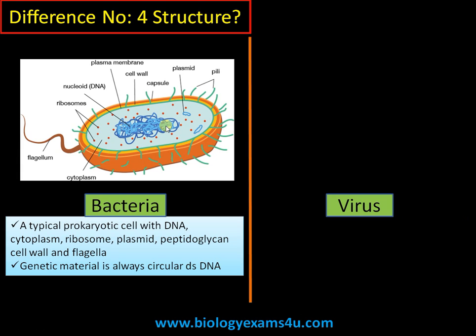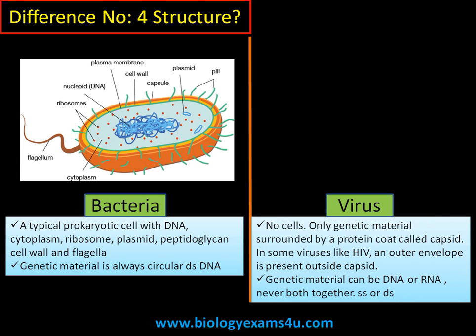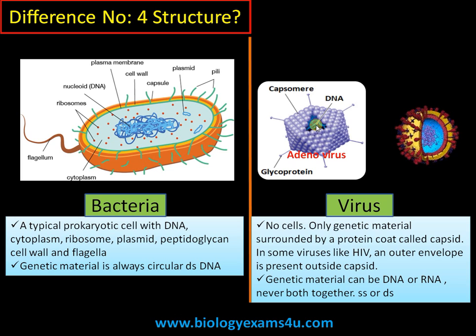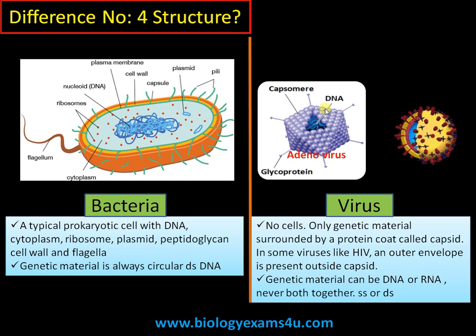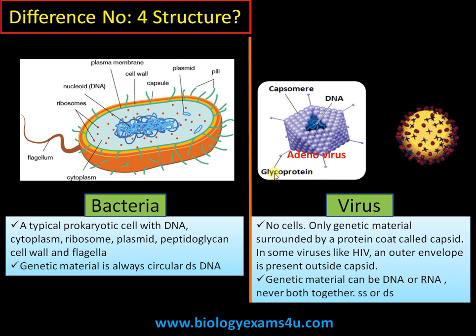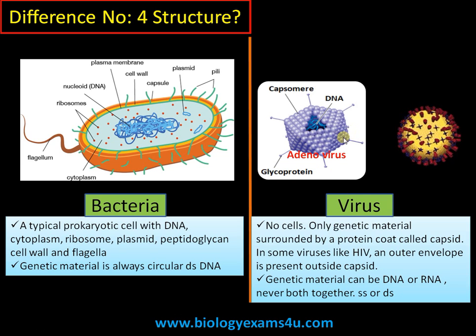Whereas a virus does not have a cellular organization. It is simply genetic material — DNA or RNA — surrounded by a protein coat called the capsid. The individual unit of the capsid is called a capsomere. Sometimes there is an outer envelope, as in the case of HIV, which is made up of glycoprotein. You can refer to our previous videos for more information about virus structure.